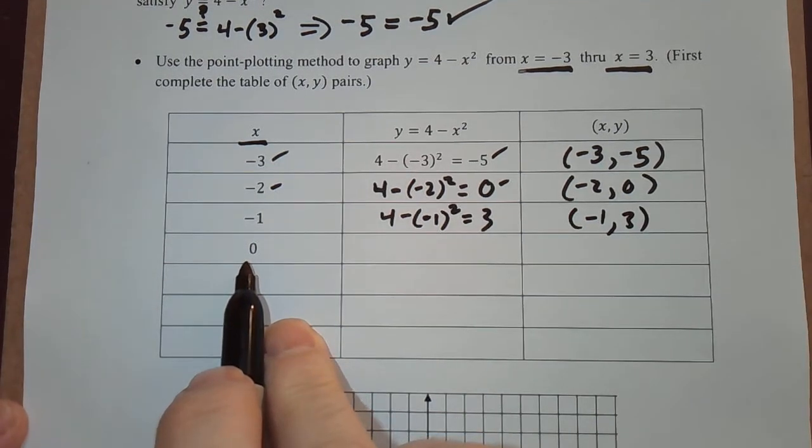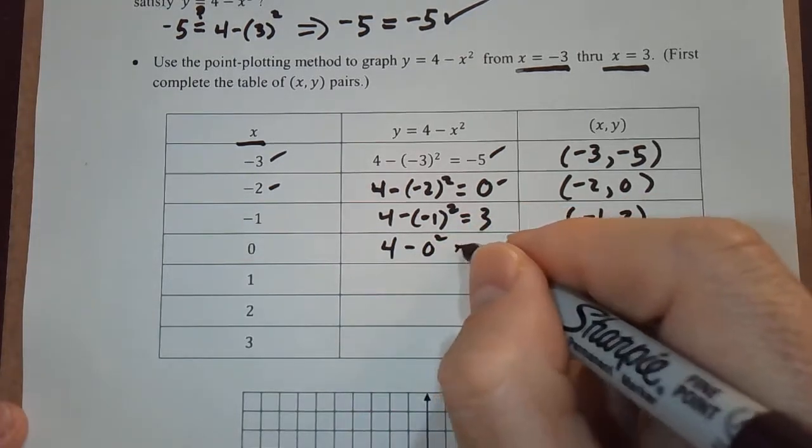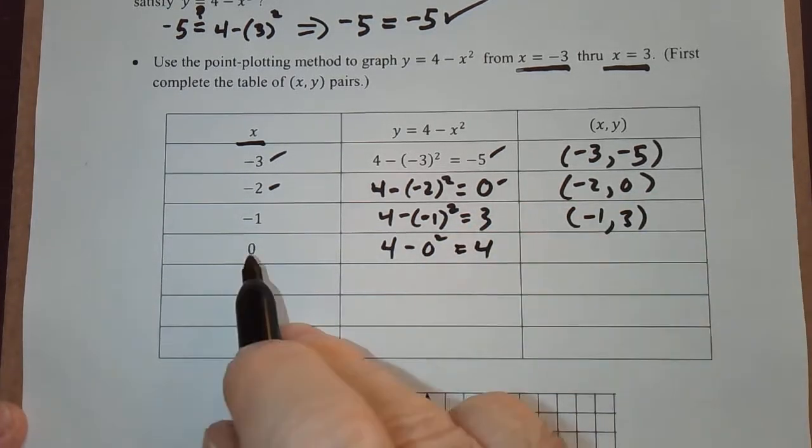Plugging in 0, that should be easy, 4 minus 0 squared. That's 4, so 0 comma 4.